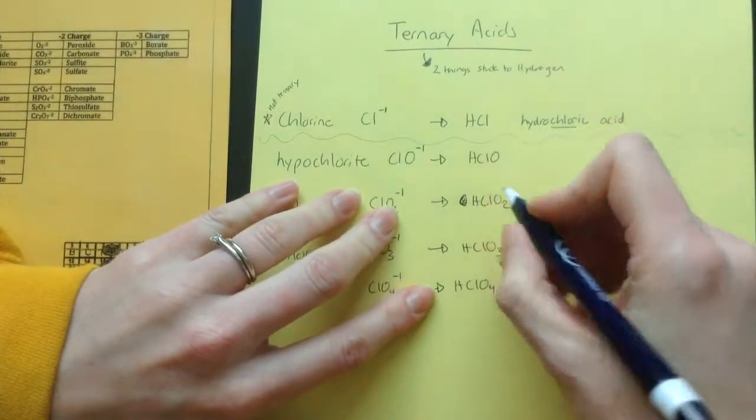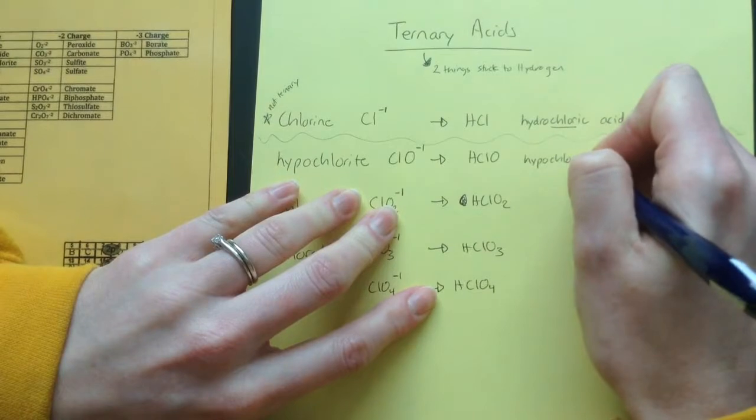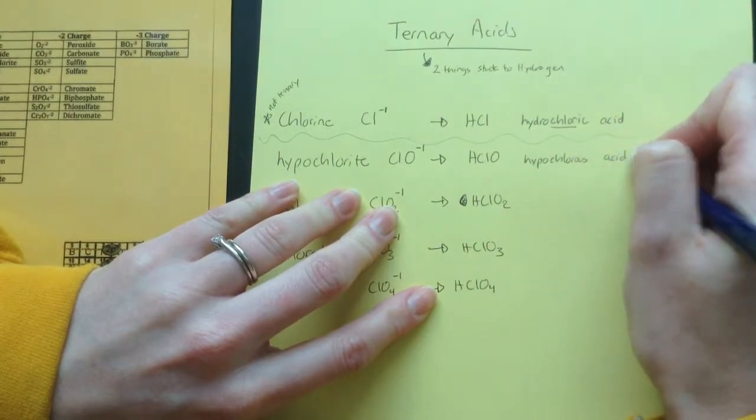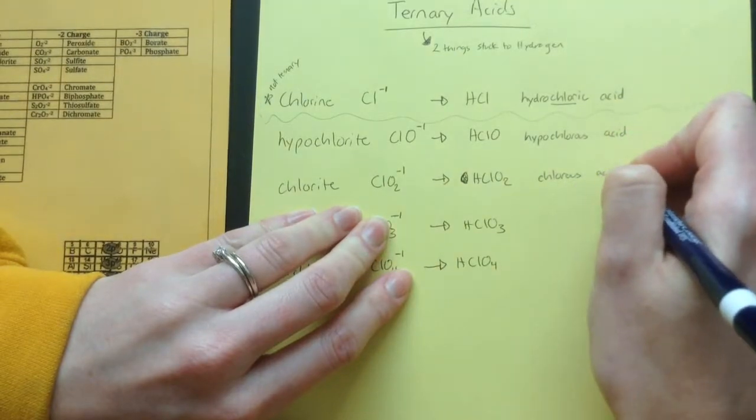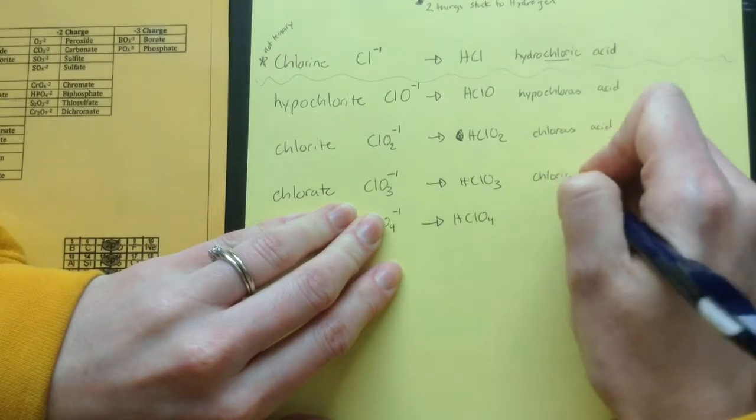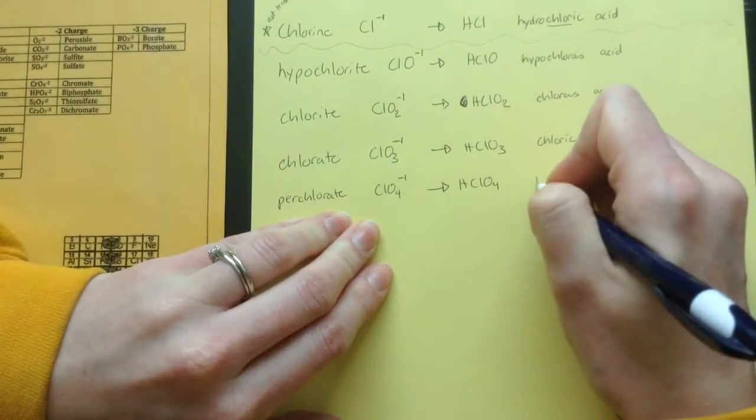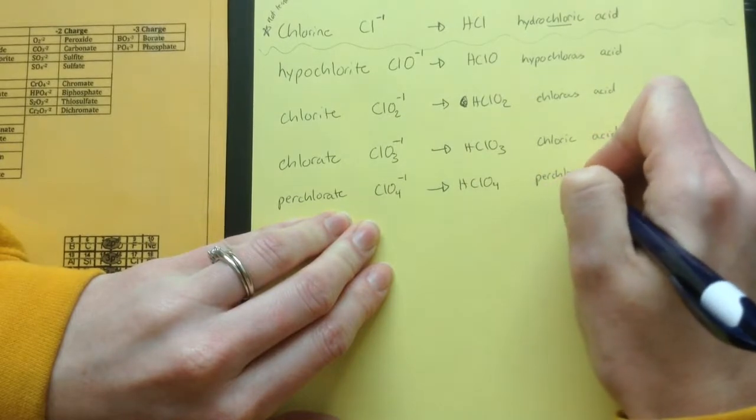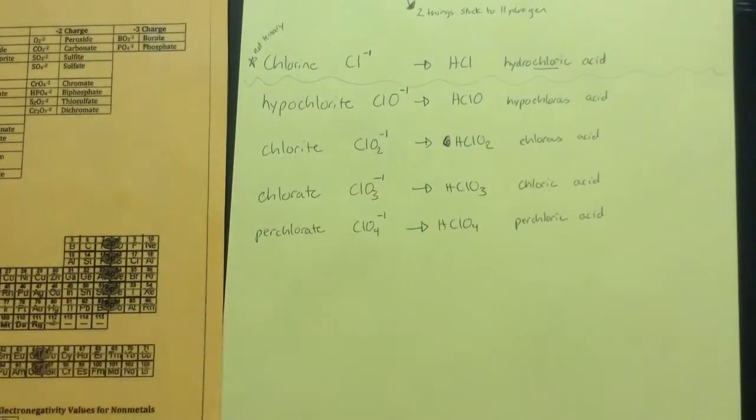So hypochlorite becomes hypochlorous acid, chlorite becomes chlorous acid, chlorate becomes chloric acid, and perchlorate becomes perchloric acid. So these might be easier than you might be thinking.